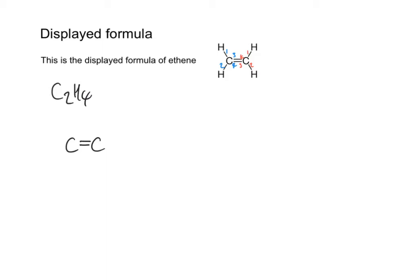I've already got two bonds for the carbon atom on the left, so I'm going to finish it off — because it can make four, there's room for two more bonds. The one on the right already has its two bonds in the middle, so I need to give it two more bonds as well. Each of these bonds goes to a hydrogen. Remember the symbol for hydrogen is a capital H, not a lowercase h. Make sure you include the hydrogen atoms and don't forget to put them on.